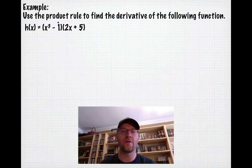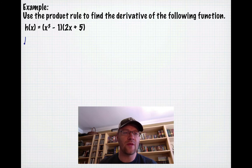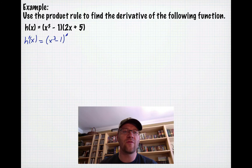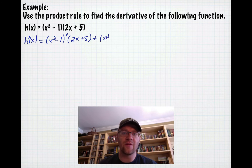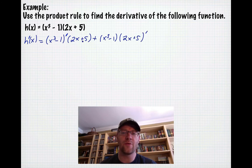Our example: use the product rule to find the derivative of h(x) = (x³ − 1)(2x + 5). Following the product rule pattern, h′(x) equals the derivative of the first function (x³ − 1)′ multiplied by (2x + 5), plus (x³ − 1) multiplied by the derivative of (2x + 5). I suggest writing the prime notation clearly so you track which part you're differentiating.